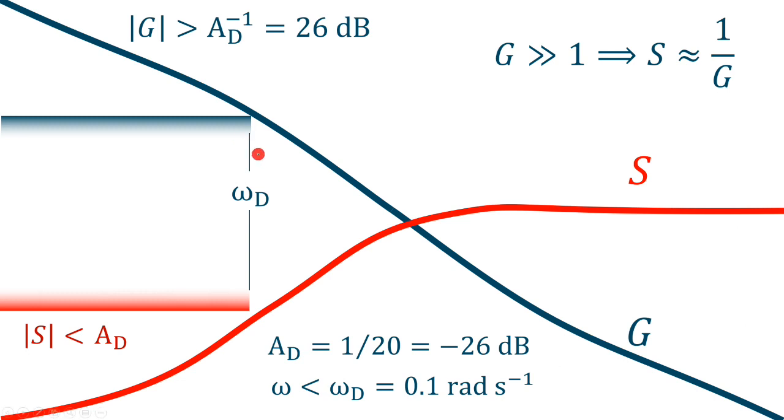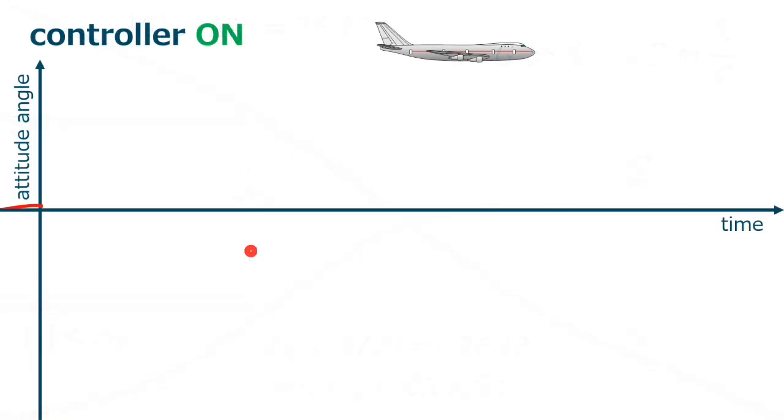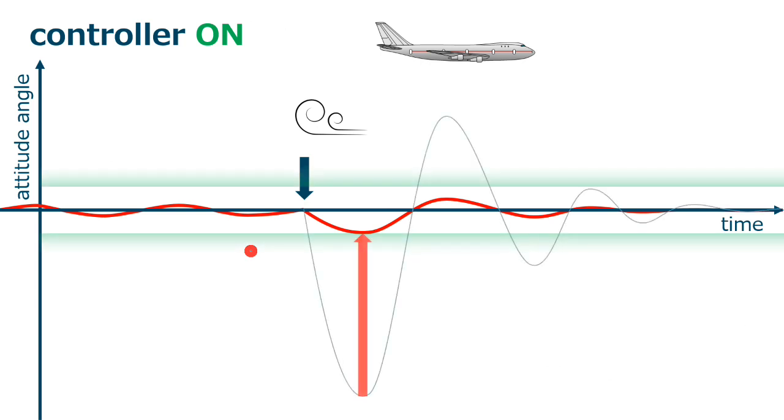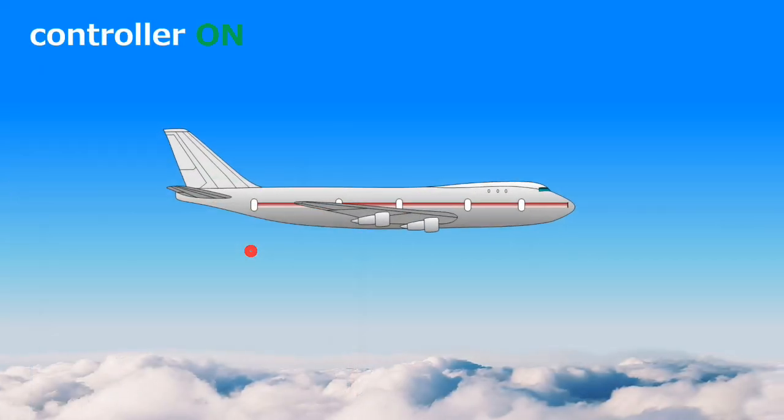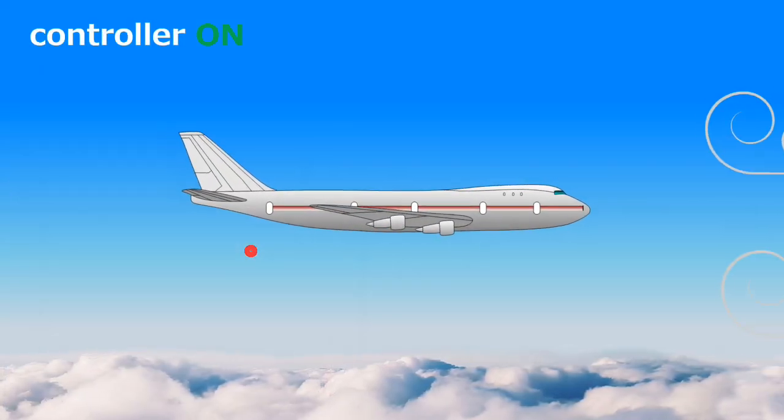Then, we design the controller to comply with this specification and we verify the rejection of the disturbance directly at the plant. From the initial amplitude to the final one. So, you can have a safe and comfortable flight.